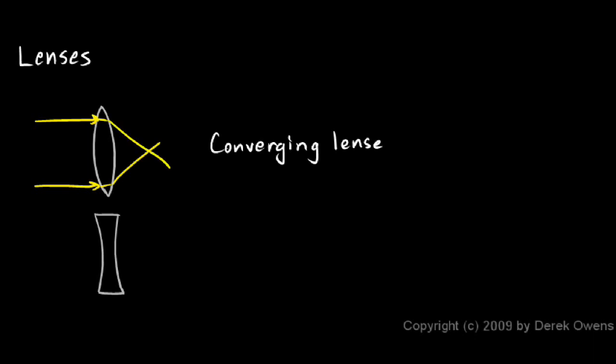These light rays will converge — they'll cross and keep going — but at this point, what they call the focal point, they converge. So this is a converging lens.